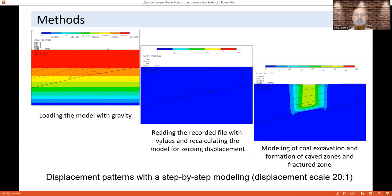Step 2: Reading the recorded file with values and recalculation of the model for avoiding displacement in the case simulation. Initial stress-strain state of strata were obtained. Step 3: Modeling of coal excavation and formation of caving zone and fracture zone. This is the basic model. Step 4: Simulation of flooding 40% of fracture zone. And step 5: Simulation of flooding 100% of fracture zone.